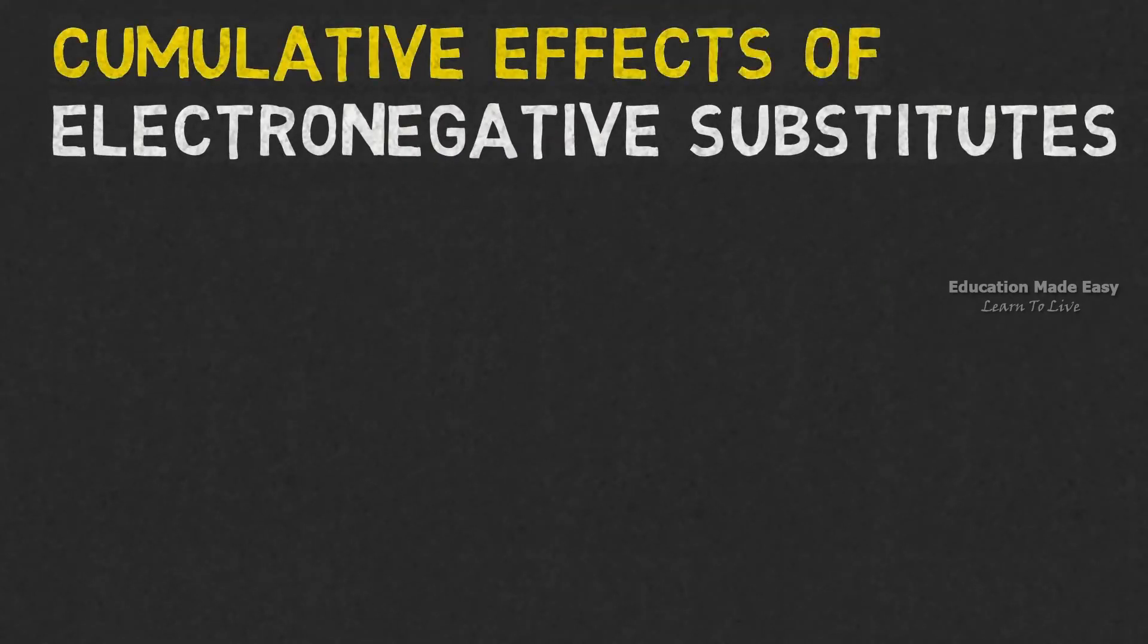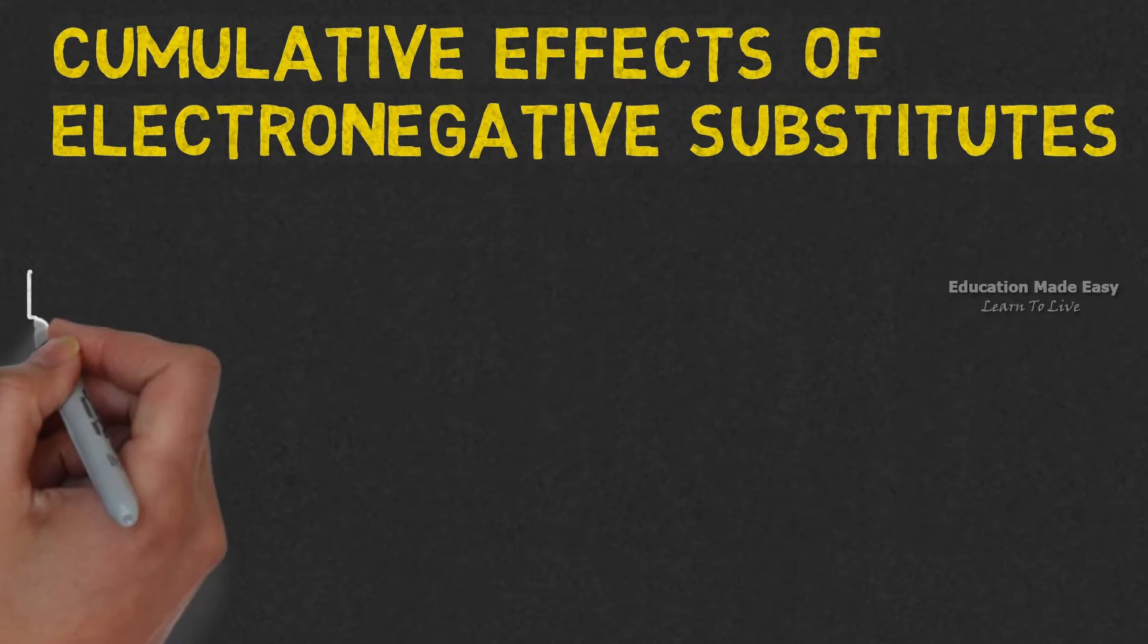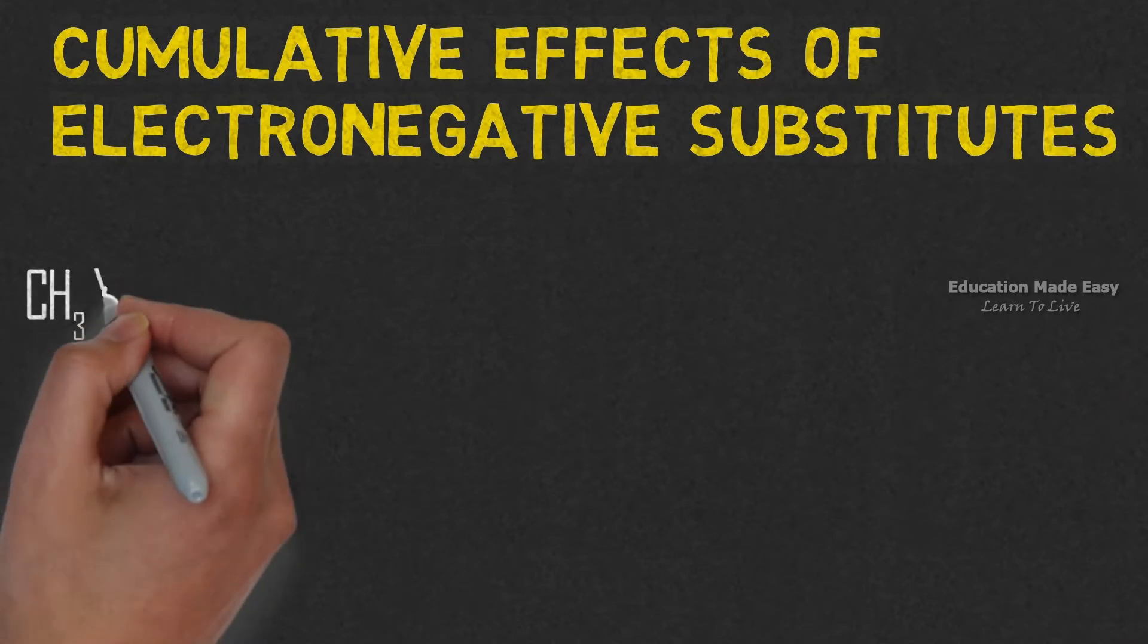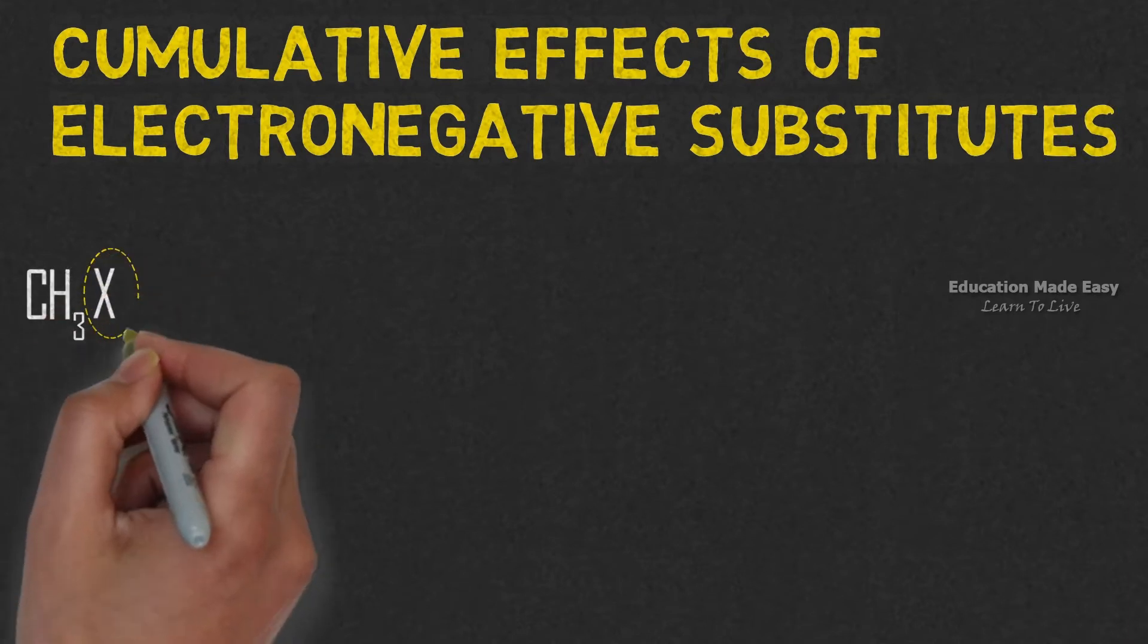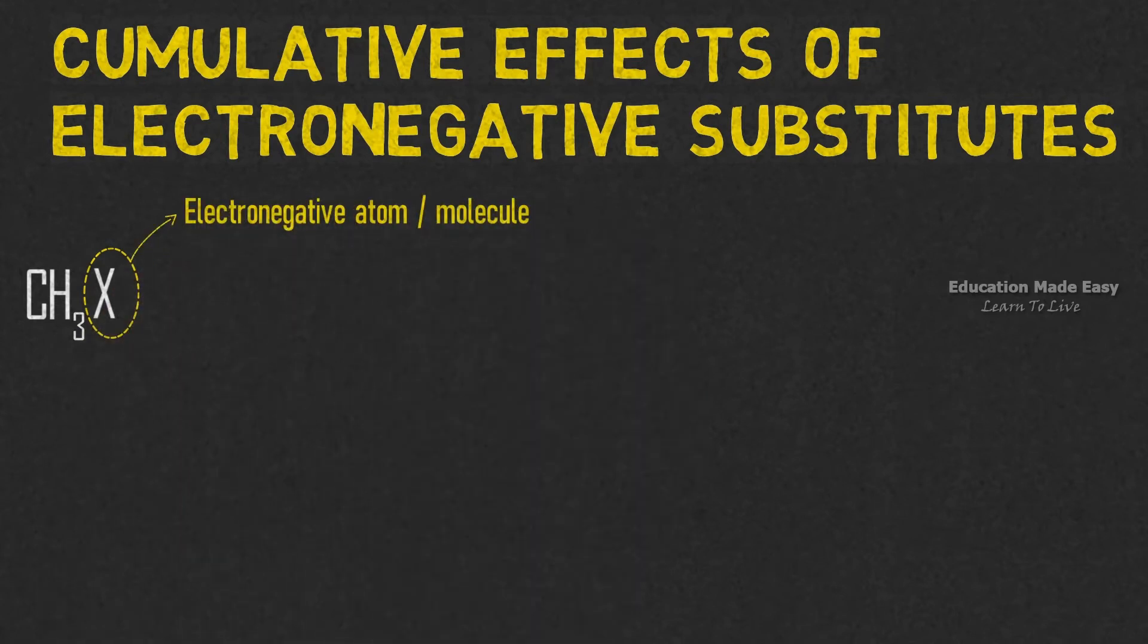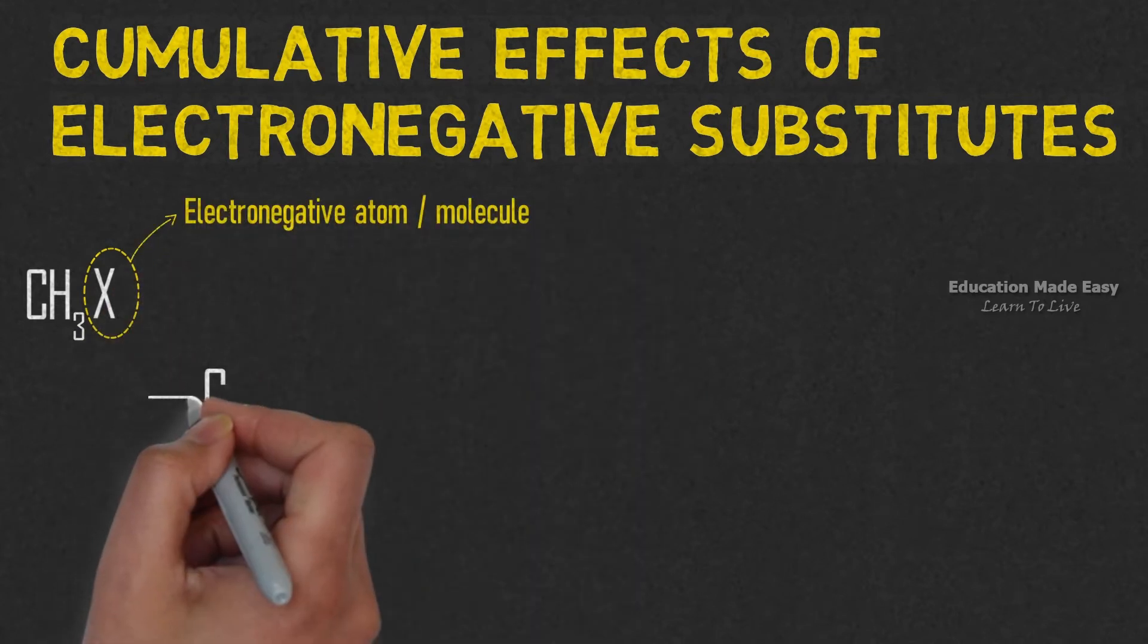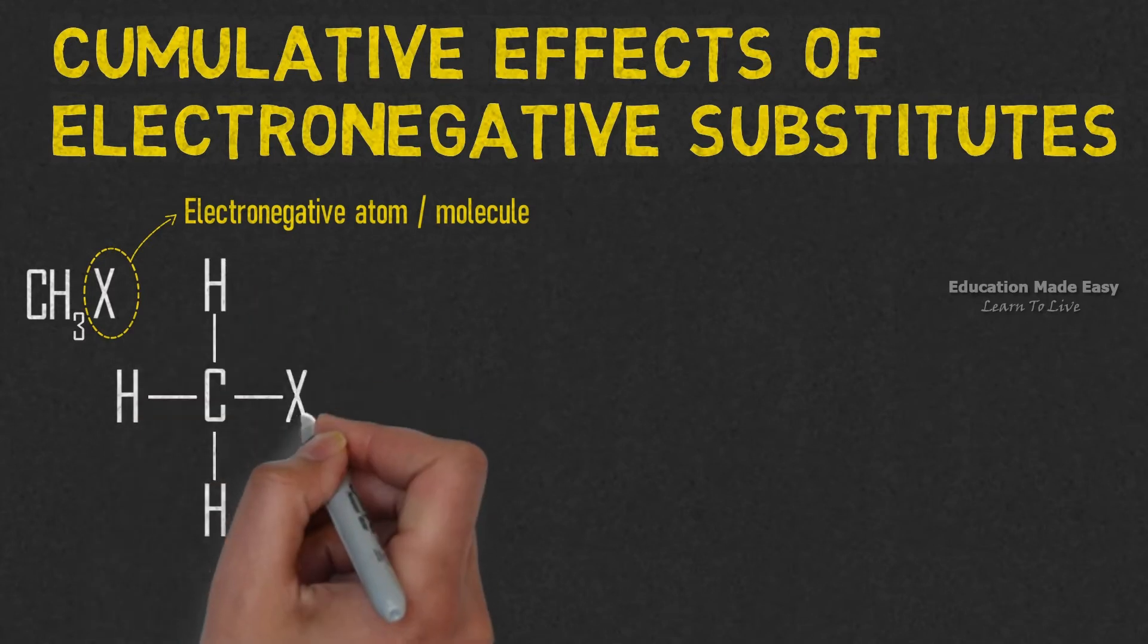Let's discuss cumulative effects of electronegative substitutes. For this, consider the molecule CH3X, where X represents an electronegative atom or a molecule. The structure of the molecule will be like this. Let the X have some value for electronegativity.